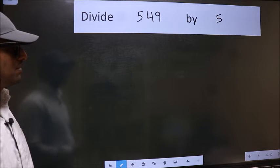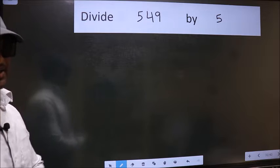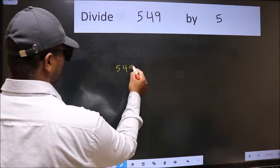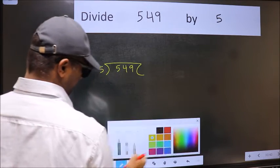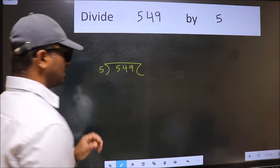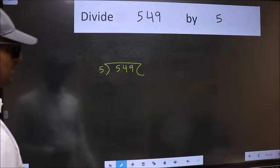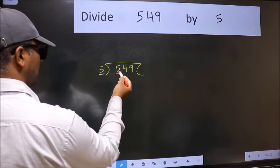Divide 549 by 5. To do this division, we should frame it in this way: 549 here and 5 here. This is your step one. Next, here we have 5 and here also 5. When do we get 5 in the 5 table? 5 once is 5.